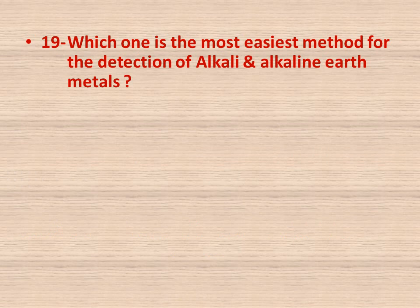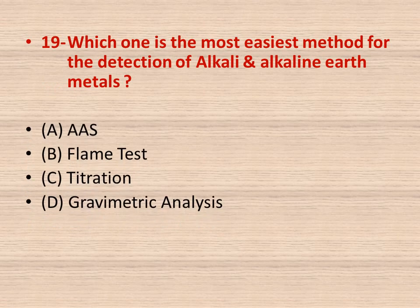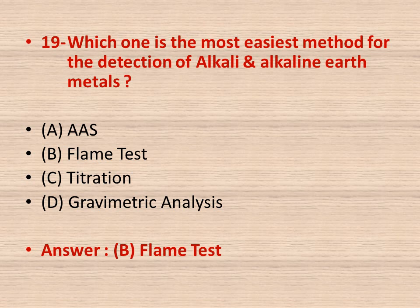Question number nineteen: which is the easiest method for the detection of alkali and alkaline earth metals? Options: A is atomic absorption spectroscopy, B is the flame test, C is titration, D is gravimetric analysis. The right answer is B — the flame test is the easiest method for detection of alkali and alkaline earth metals.